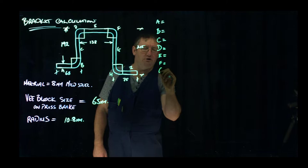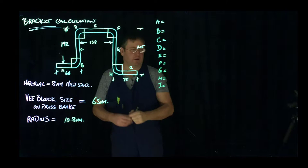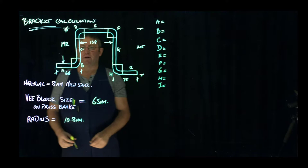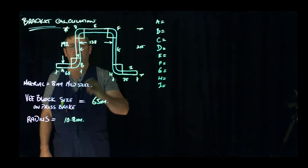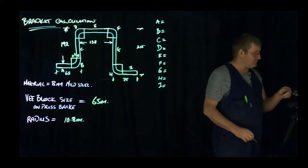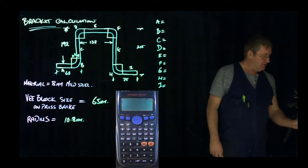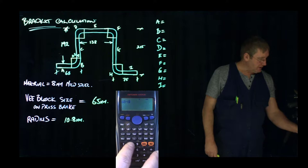So the very first one we have is 68mm. And what we need to take off from the inside is the material thickness which is 8mm at this point, and our radius is 10.8. So we start off with 68mm minus 8mm material thickness minus 10.8 for the radius. And that gives us a length for the straight, 49.2mm.